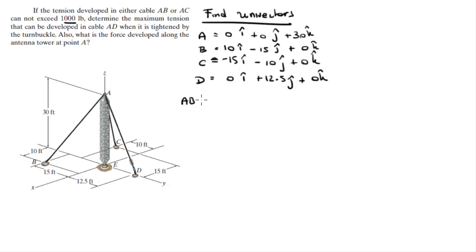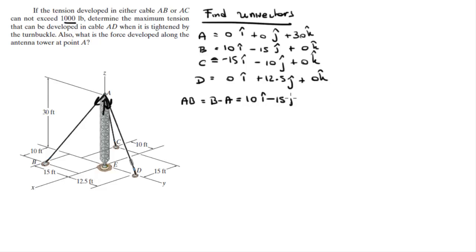We have four unit vectors: one toward B, one toward C, one toward D, and one for the tower going up — because if the cables all go down, the tower force must go up. To find unit vector AB, you do B minus A, which comes out to (10i − 15j − 30k).